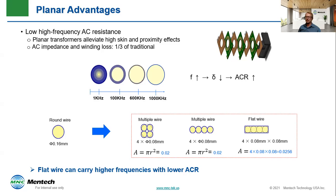In high frequency switchers, most power loss is caused by AC impedance due to skin effect. Planar eases that. Delta represents the skin depth here, which is the depth below the surface of the conductor at which the current density falls to 1 over E, which is about 37% of the current at the surface. In this drawing, the blue area represents the skin depth that's carrying AC; yellow is not. So as frequency increases, skin depth decreases, and ACR increases.